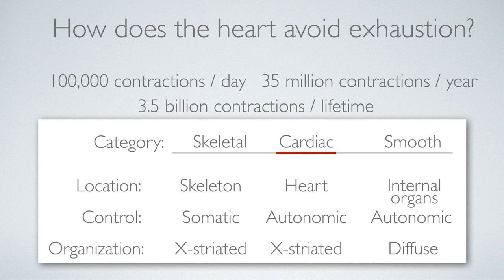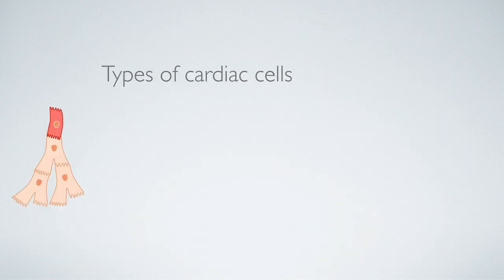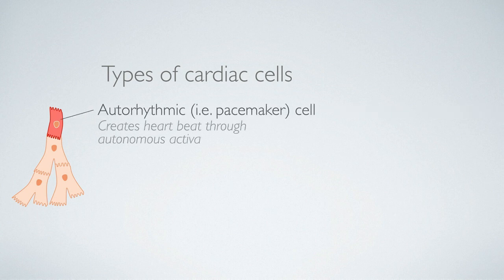We're going to talk about three levels of security in the design of your heart that help prevent exhaustion. The first focuses on the pacemaker cells of the heart. The pacemaker cells are known as auto-rhythmic cells or auto-rhythmic myocardial cells, and they are responsible for creating the heart's beat. It can be modulated through the autonomic nervous system, but the auto-rhythmic cells themselves — just one cell — is capable of creating that heartbeat.